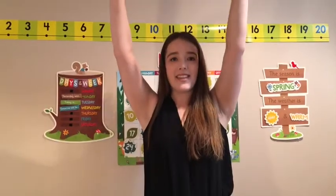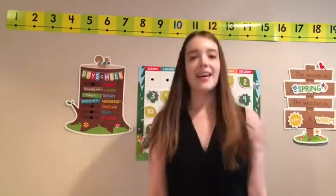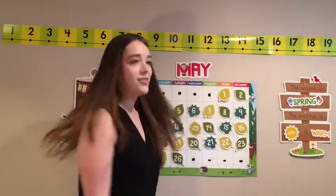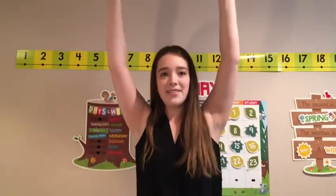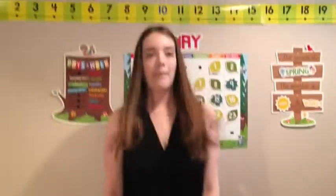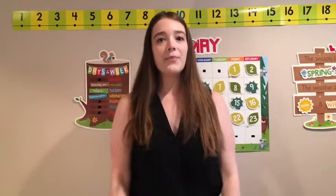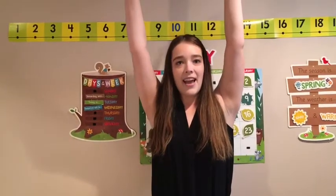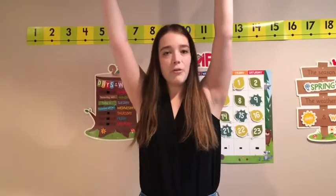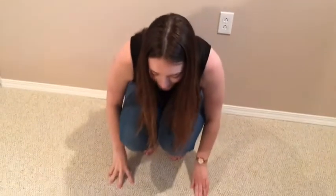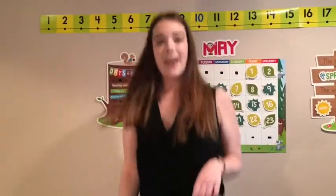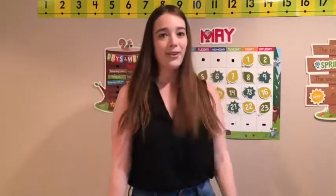And now let's do hands up high, reach for the sky. Hands down low, touch your toes. Jump up and down, and spin in a circle. Hands up high, reach for the sky — how do you go taller? On your tiptoes. Hands down low, touch your toes all the way to the ground. Jump up and down, and spin in a circle. Hands up high, reach for the sky — how do you go taller? On your tiptoes, how do you go taller? You can jump, jump, jump, jump. Hands down low, touch your toes all the way to the ground. Jump up and down, and spin in a circle. Great moving.